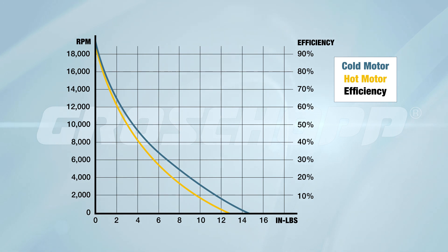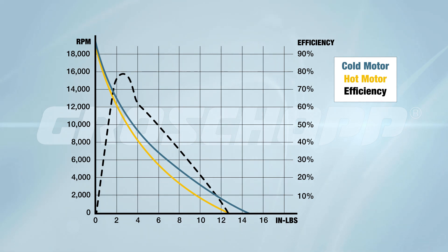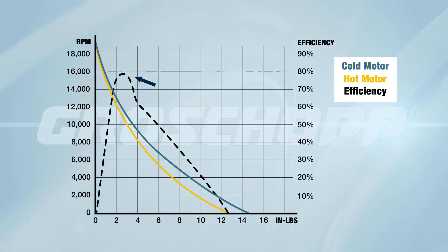Now we've added the motor's efficiency curve, shown as the black dashed line. Under ideal circumstances, the motor's peak efficiency will occur very near the motor's operating torque. However, in most cases, the actual peak efficiency will occur at higher torque than the rated torque.